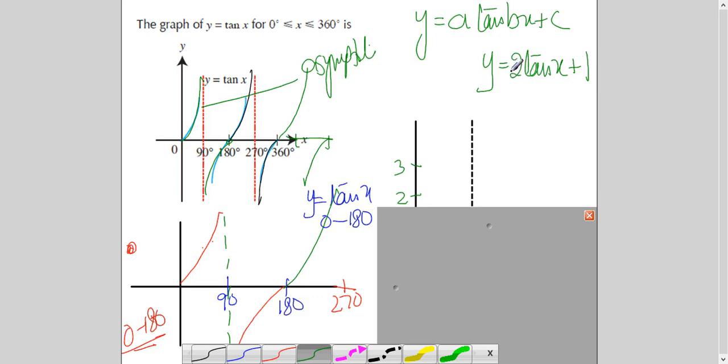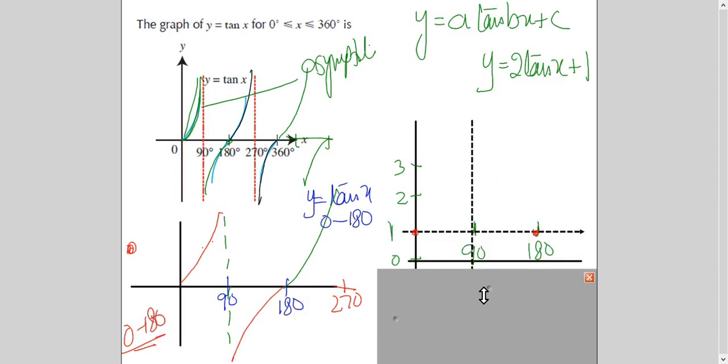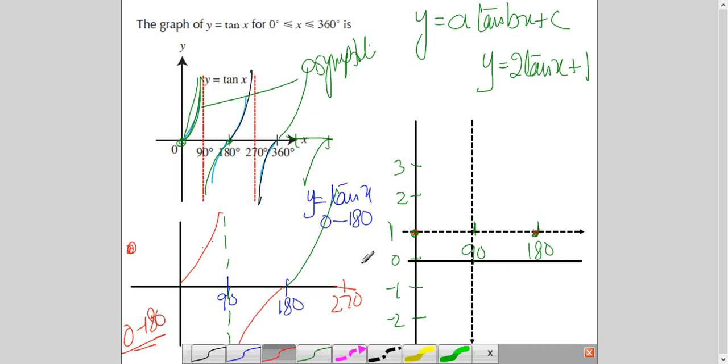So, if we see the general form of tan graph, same thing like we did in sine and cosine. A tan B X plus C. There is no maximum minimum. You can't do C plus A is maximum, C minus A is minimum. No. There is no maximum minimum. This is your axis of the curve. This number here just gives you how steep the curve will become. Within this interval, maybe it gets steeper and steeper. Or, it gets like this. So, this shape of the curve here is identified because of this number.